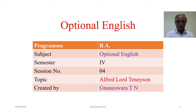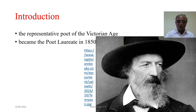Hello students, I am Jnaneshwaratian, assistant professor of English. Today I am going to tell you about the contribution of Alfred Lord Tennyson to English poetry. Alfred Lord Tennyson is the representative poet of the Victorian age. His poetic activity extended over 60 years, and he became the poet laureate in 1850.